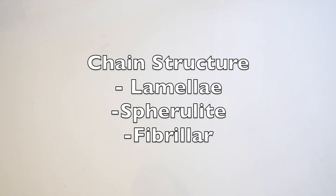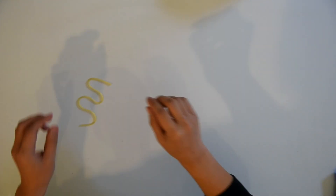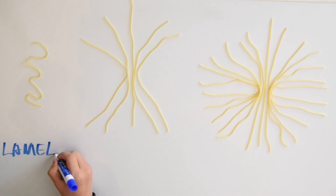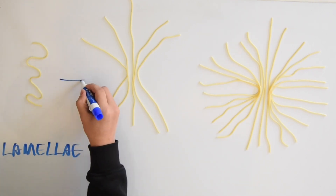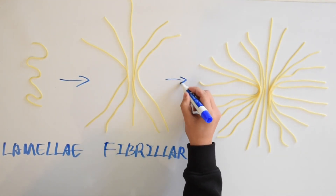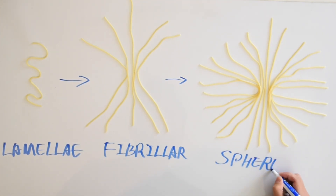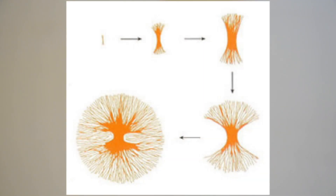There are three main structures of crystalline regions: lamellae, spherulite, or fibrolar. The simplest one is lamellae, and the chain folds in this way. Fibrolar structures are formed when lamellae stacks twist together. Then, over time, continued growth of these regions yields the spherulite structure, which will grow uniformly as a sphere.